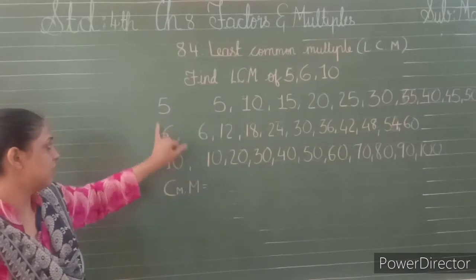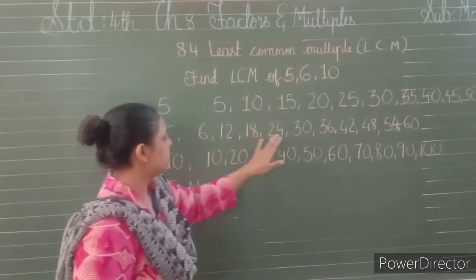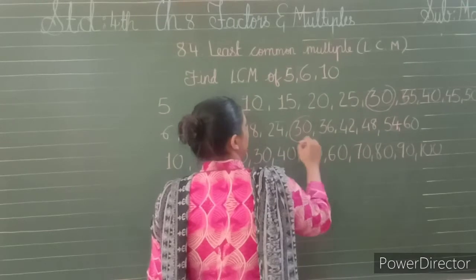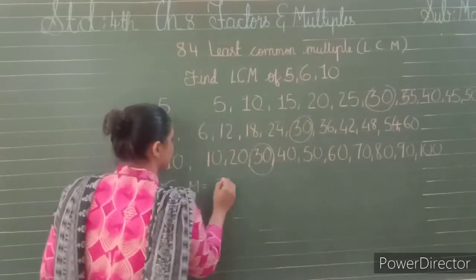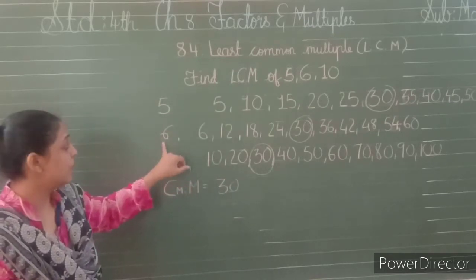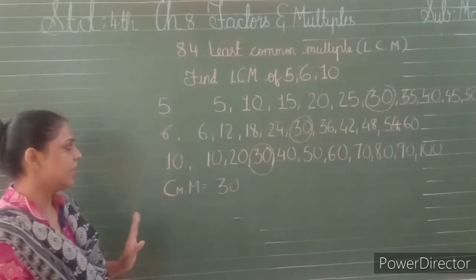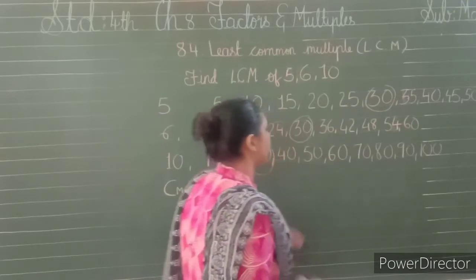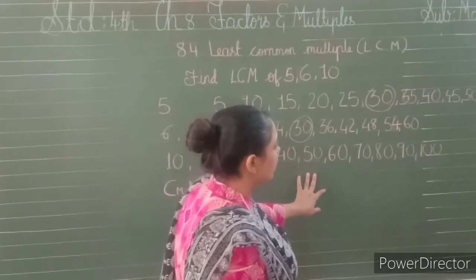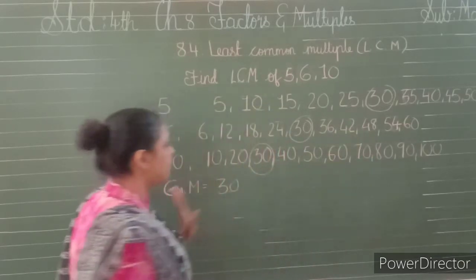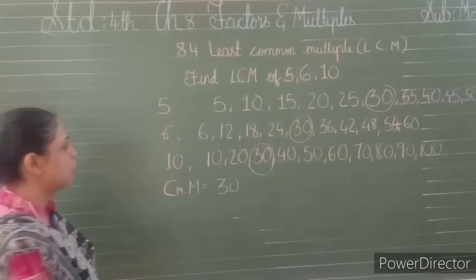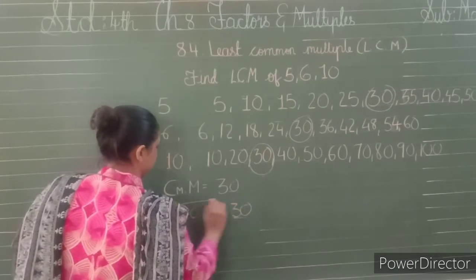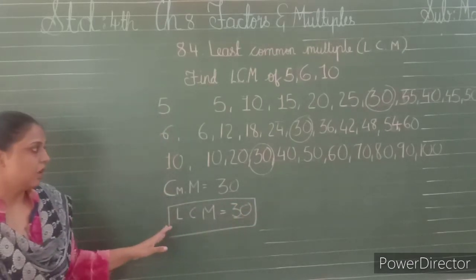Now find out the common multiples. 30 is present in multiples of 5, also in multiples of 6, and also in multiples of 10. So we write 30 as the common multiple. 30 is the only common multiple we have found so far, so we can say 30 is the least common multiple of 5, 6, and 10.